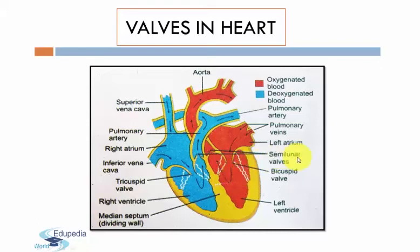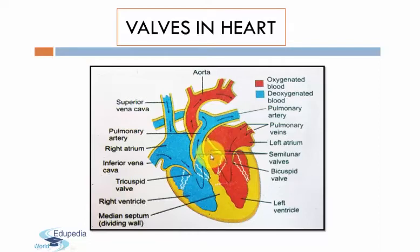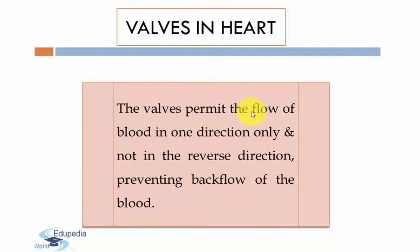There are two types of semilunar valves present. The first is the aortic semilunar valve, located at the point of origin of the aorta from the left ventricle, and there are three in number. The pulmonary semilunar valves are located at the opening of the right ventricle into the pulmonary artery, and are also three in number. The valves permit the flow of blood in one direction only, preventing backflow of blood.